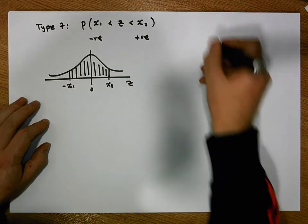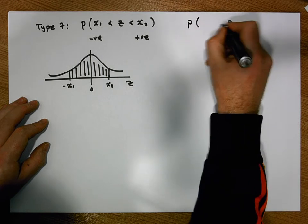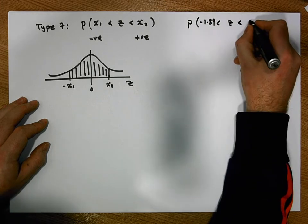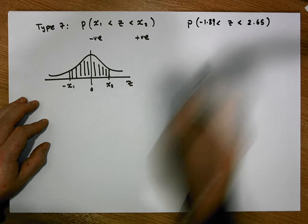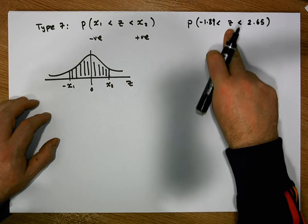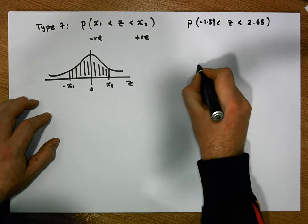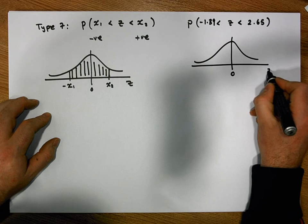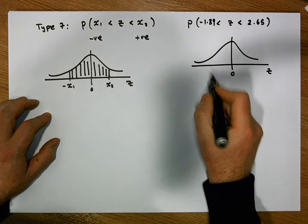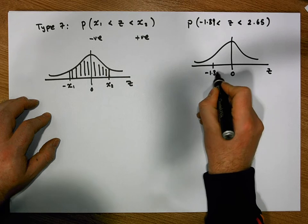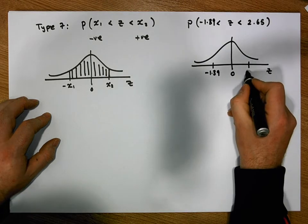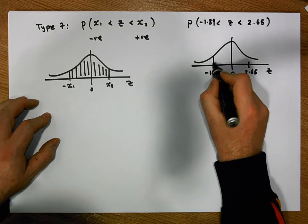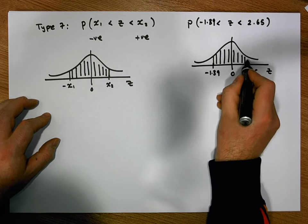Let's have a look at a particular example. Say we want to calculate the probability of observing a z-score that's greater than minus 1.39 and less than 2.65. The first thing we always do is draw the standard normal curve — a bell-shaped curve centered on zero, with the horizontal axis representing z values. Minus 1.39 is over here and 2.65 is over here. We want the area between these two values.